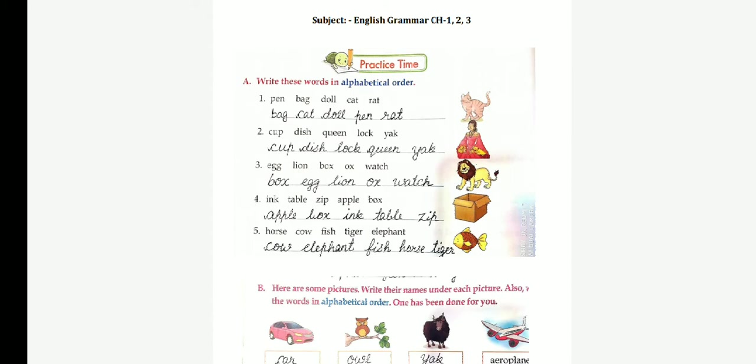Words are made up of vowels and consonants. Which are the vowels? A, E, I, O and U. And other letters are called consonants. First practice time, write these words in alphabetical order.